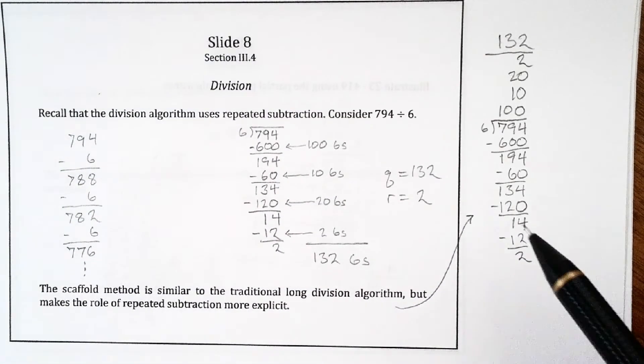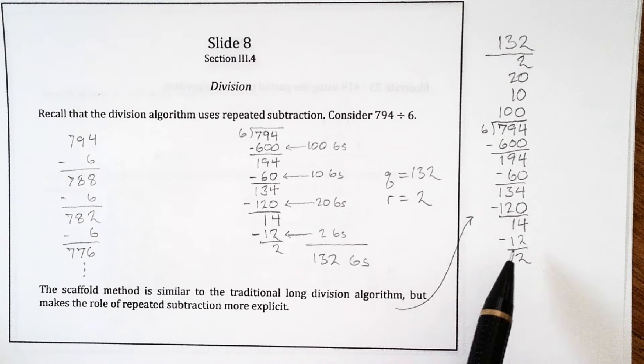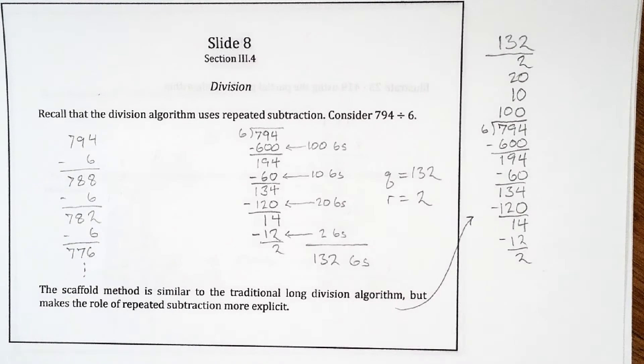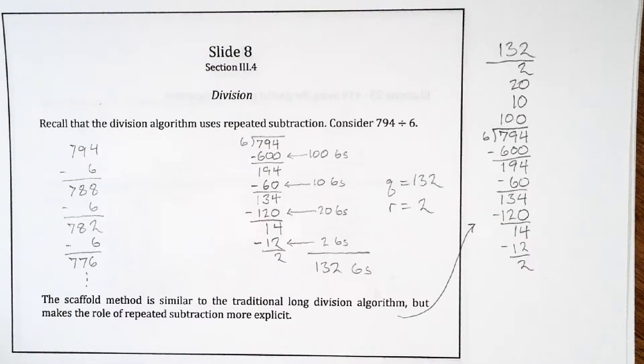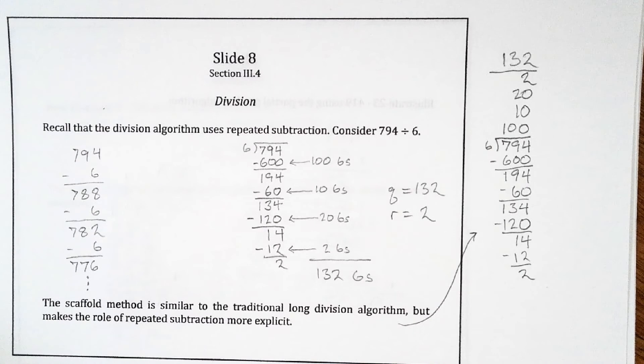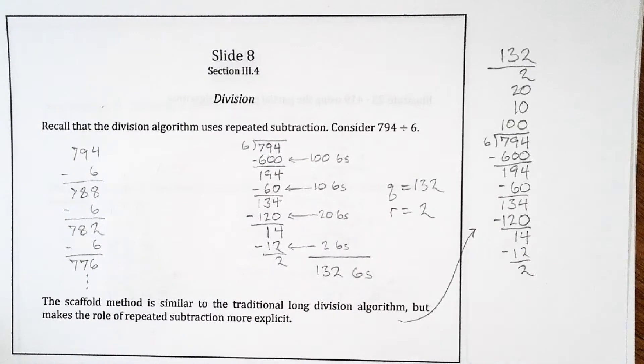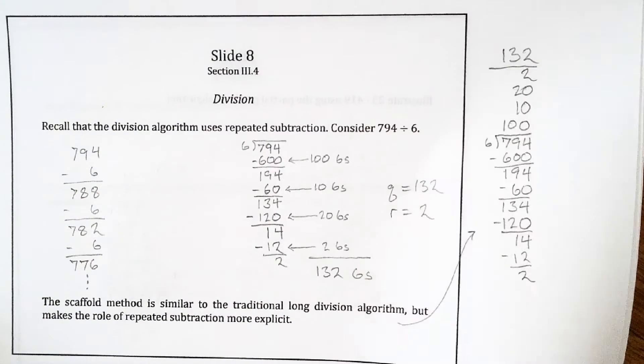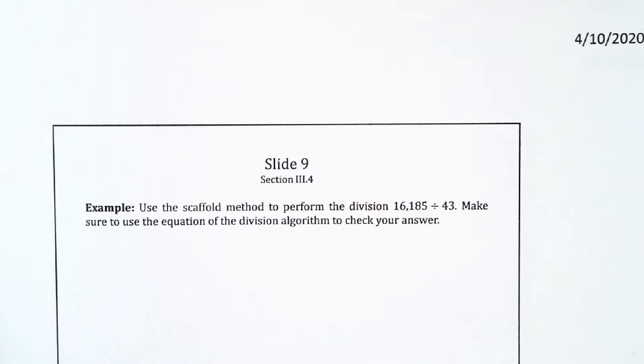You can see it has a lot of similarity to the traditional long division algorithm, but it's not hiding as much. You can really see the numbers there. You can see what you're subtracting. You can tell that you're subtracting groups of 6s. The reason traditional long division has all that subtraction is because it's repeated subtraction. That's how the division algorithm works. It's really accomplishing what we're doing here, but it hides a lot of the steps.